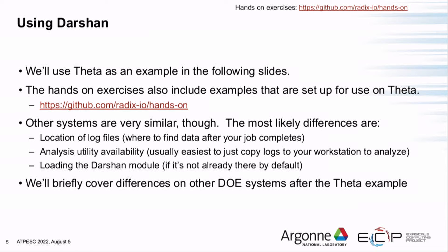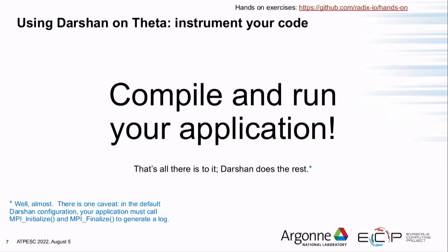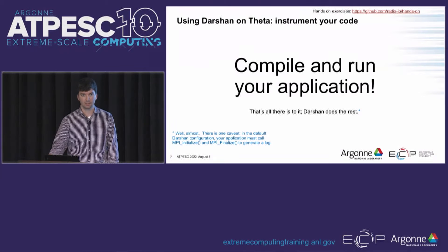Keep in mind what works where and whether Darshan is available by default. All the systems mentioned have Darshan on by default, but you may need to load it at other facilities. On Theta, you can use the module list command to see what's currently loaded and should see Darshan 3.3.0 already on and available. If not, use the module load command. Then simply compile and run your application — the software module integrates Darshan directly into the compiler wrappers, transparently handling the linking.